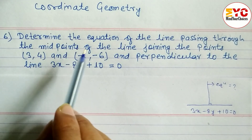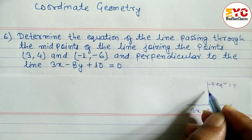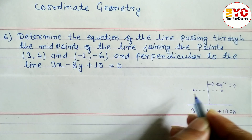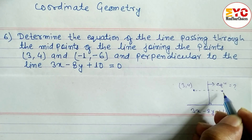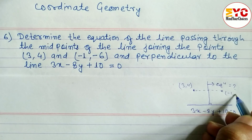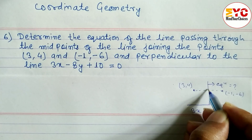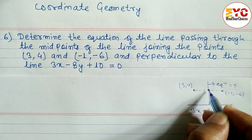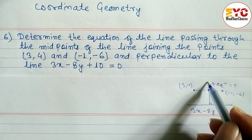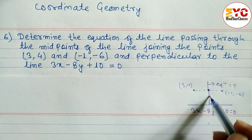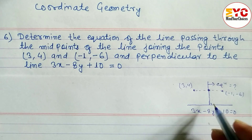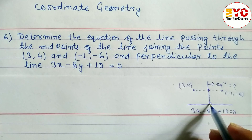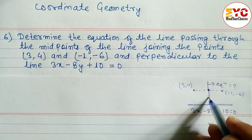The required equation of the line passes through the midpoint of the line joining two points: (3, 4) and (-1, -6). This line is perpendicular to the given line, so there is a 90-degree angle between them. That means the product of their slopes is equal to minus one: M1 times M2 equals -1.